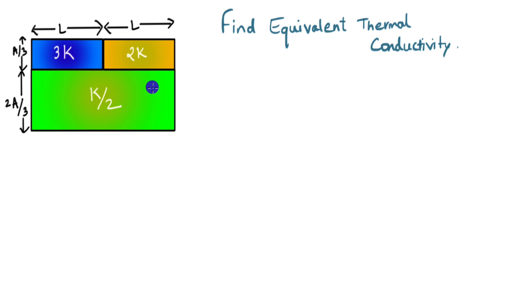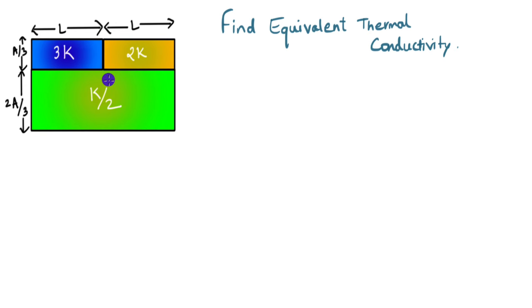We can look at the combination. We see that these two blocks — the blue and the yellow block — they are in series with each other. And the combination of the blue and the yellow block is in parallel with the green block. So in order to find the equivalent thermal conductivity, we need to first find the equivalent conductivity of the blocks in series, and then find the equivalent conductivity of that combination with the green block that is in parallel.